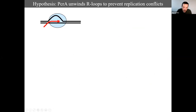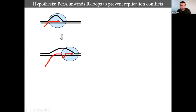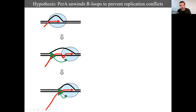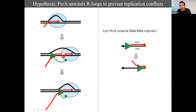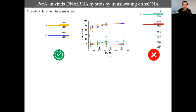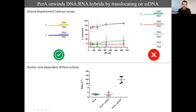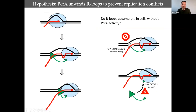Inigo wondered whether PcrA might be unwinding R-loops. The idea is that if you had an R-loop behind the RNA polymerase, UvrD might bind and translocate forward along the template strand in a 3'-to-5' direction, removing that R-loop. First, we tested whether PcrA can unwind DNA-RNA hybrids — yes, it can, using oligonucleotide strand displacement assays. As long as there's a DNA single-stranded overhang, PcrA will load and displace either DNA or RNA, but it won't move along single-stranded RNA.